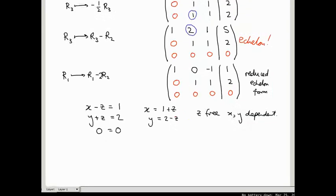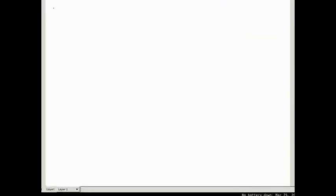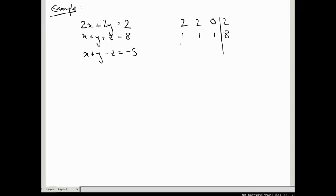Let's do another example. I'm going to give a new page. So, let's take 2x plus 2y equals 2, x plus y plus z equals 8, x plus y minus z equals minus 5. And write the augmented matrix. So, that's going to be 2, 2, 0, 2, then 1, 1, 1, 8, and 1, 1, minus 1, minus 5.